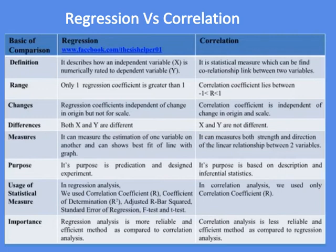The purpose of regression is prediction and designed experiments, while the purpose of correlation is based on description and inferential statistics.